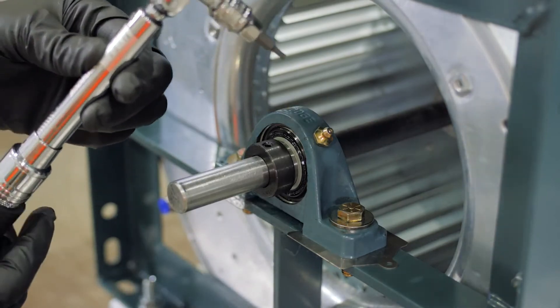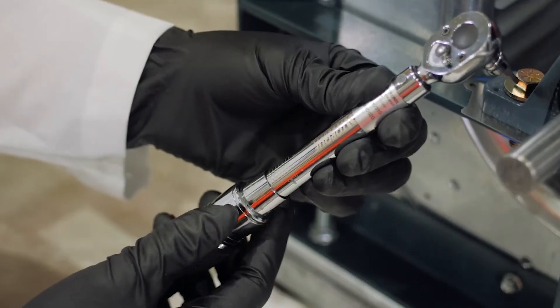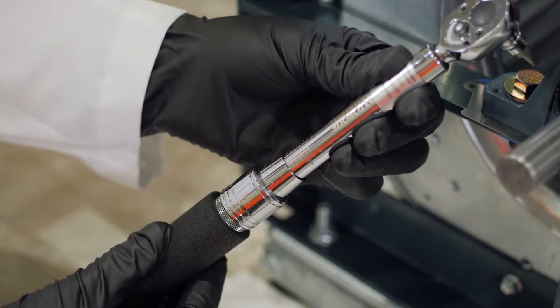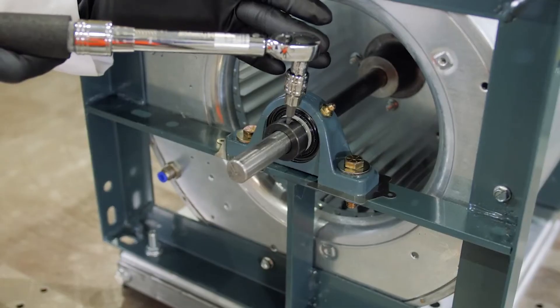Tighten the set screw until resistance is encountered. Next, using a torque wrench, tighten the set screw until reaching the torque value specified in the instruction manual.